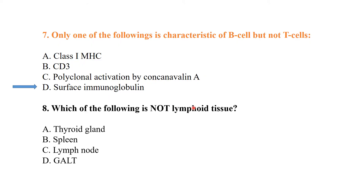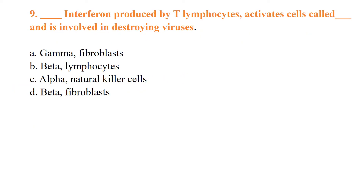Which of the following is not a lymphoid tissue? Among these, the thyroid gland is not a lymphoid tissue — it is an endocrine gland. Which interferon produced by T lymphocytes activates natural killer cells and is involved in destroying viruses?